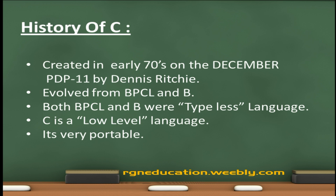Ritchie wrote most of Unix and the C compiler itself in C. Which came first? What came first was a handwritten assembler. C evolved from languages called BPCL and B. Both BPCL and B were typeless languages.